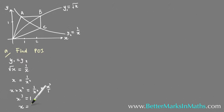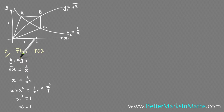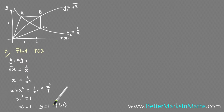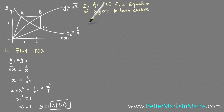To find the y value, substitute x equals 1 into either equation. The square root of 1 is 1, and 1 on 1 is 1, so y equals 1. Therefore the point of intersection is (1, 1). That's part A done.